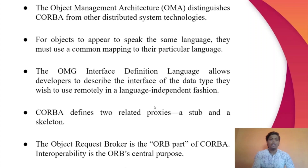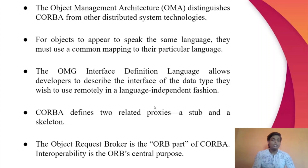Objects in an object-oriented system cooperate to achieve solutions to domain problems. For objects to appear to speak the same language, they must use a common mapping to their particular language. For code in languages such as COBOL, Java, C, and Python to communicate with one another, an intermediate language must bind them. The OMG allows developers to describe the interface of the data type they wish to use remotely in a language-independent fashion using IDL, or Interface Definition Language — we will see this in detail in a moment.